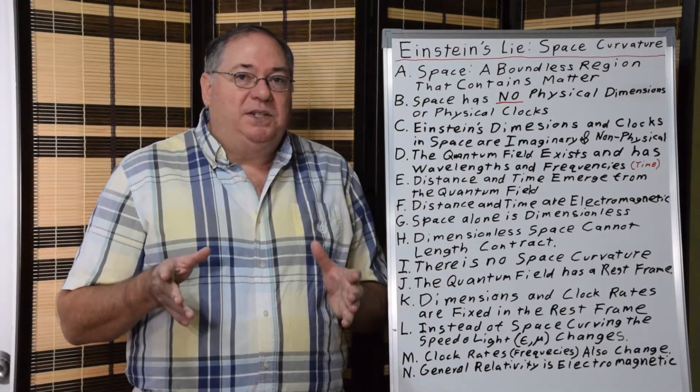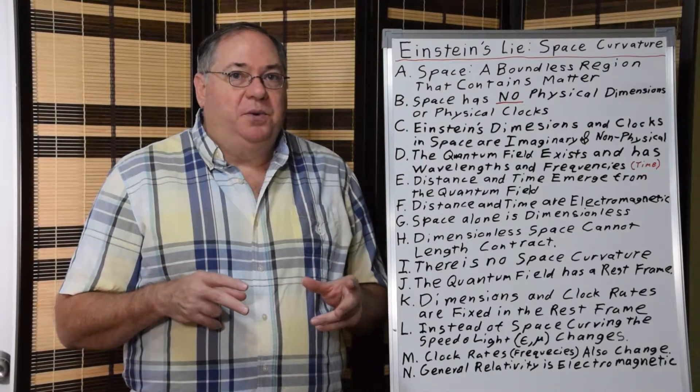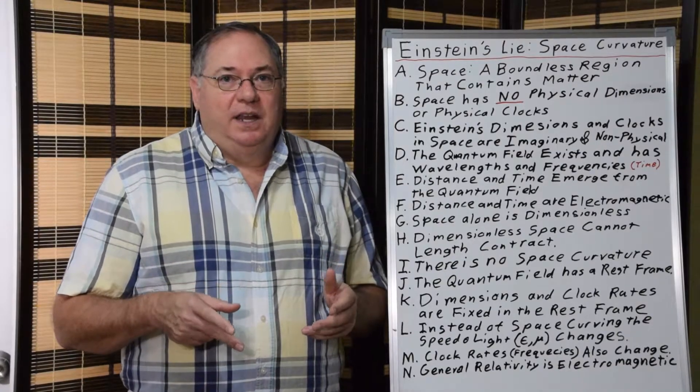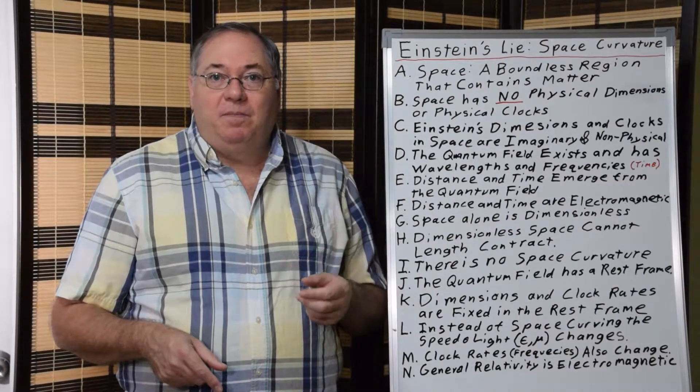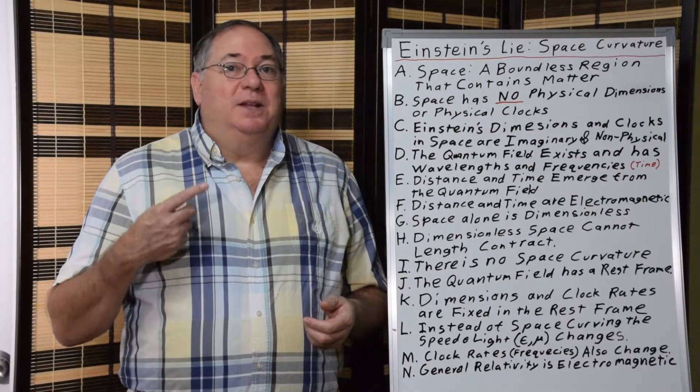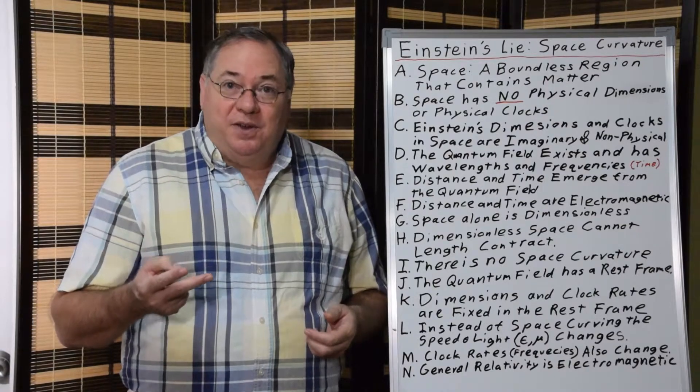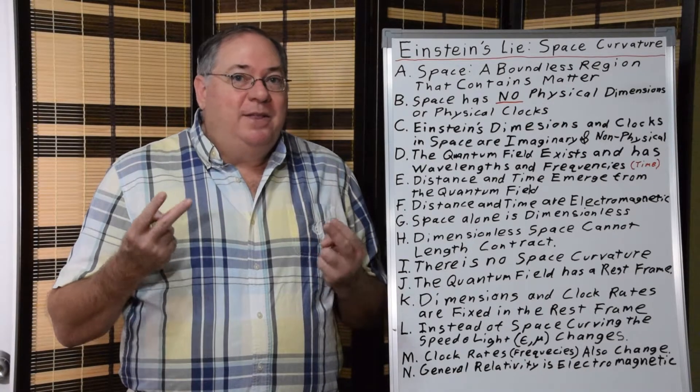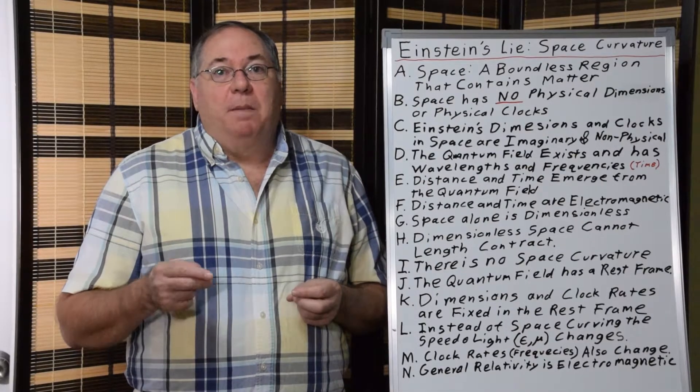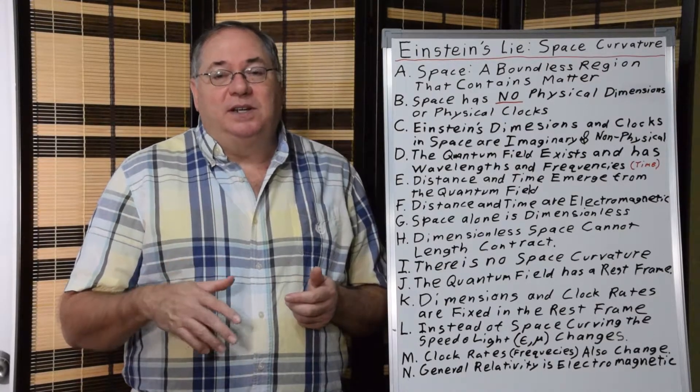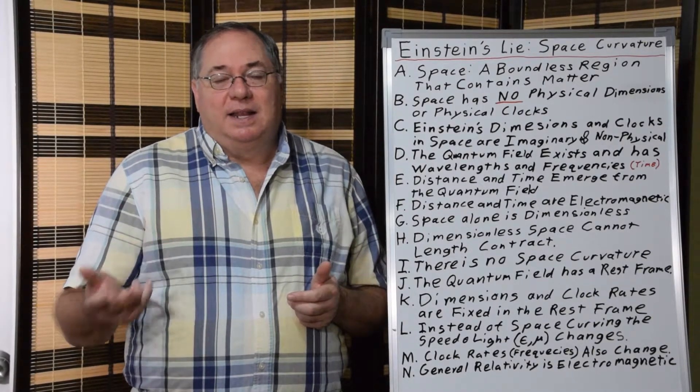And so what we find when we study general relativity is that there are two ways to get to the general relativistic answers. One is you assume space curvature and clock slowing. On the other hand, you assume the speed of light changes along with permittivity and permeability and you also have clock slowing. And either one of those approaches using these two things can give you the right answers. But some of Einstein's assumptions such as space curvature are false when we use quantum field theory.